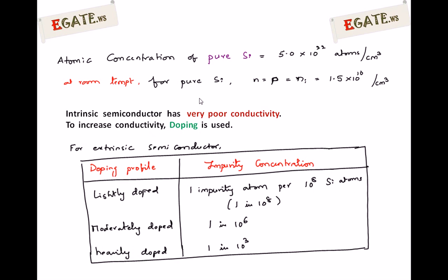Here is a table of doping profile and impurity concentration. If lightly doped, one impurity atom is added per every 10⁸ silicon atoms — that is, one impurity per 100 million atoms. Moderately doped is one impurity atom per every 10⁶ silicon atoms. Heavily doped is one impurity atom per every 10³ silicon atoms — one impurity per every 1000 atoms.